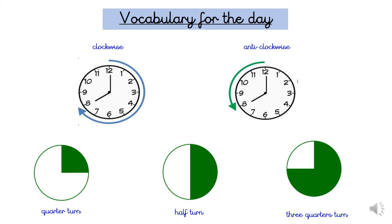Pause the video and go and practise using these words, directions and positions. You could experiment moving clockwise, give somebody at home instructions to move a quarter turn, a half turn, three quarter turns, and tell them to move clockwise or anti-clockwise. You could get a robot and give it instructions on how to move. Once you've had a really good go at using these words, come back to find out what we'll be doing next.